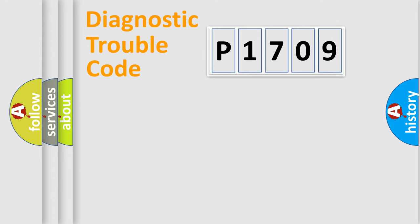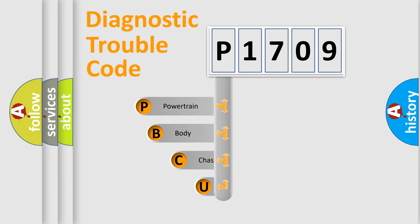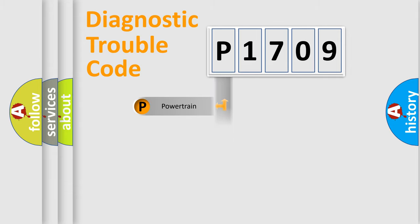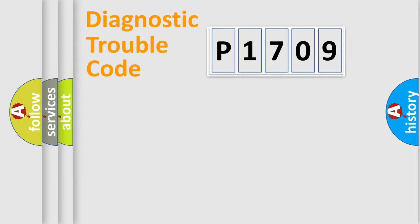Let's do this. First, let's look at the history of diagnostic fault code composition according to the OBD-II protocol, which is unified for all automakers since 2000. We divide the electric system of automobile into four basic units: Powertrain, Body, Chassis, and Network.